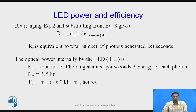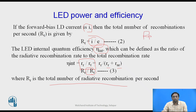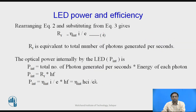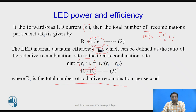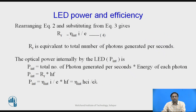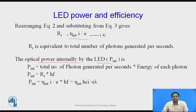Observing the second equation, R(t) = i/e. Substituting into the third equation, we can write η_int · (i/e), where R_r is equivalent to the total number of photons generated per second. The optical power internally generated by the LED, P_int, is given by the total number of photons generated per second multiplied by the energy of each photon.